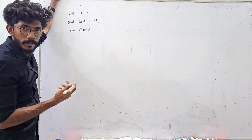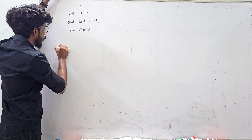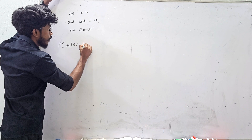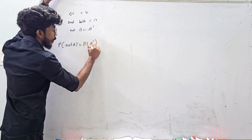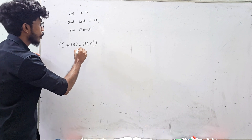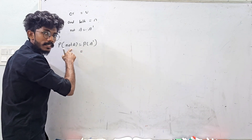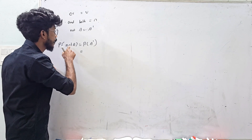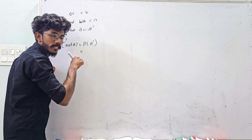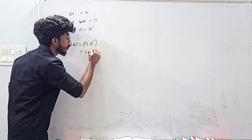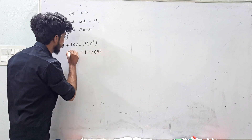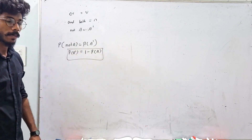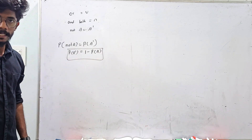Now, probability of not A — what is the meaning? Probability of A complement. 'Not A' means A is not happening. The probability of A not happening is the formula: probability of A complement equals 1 minus probability of A.